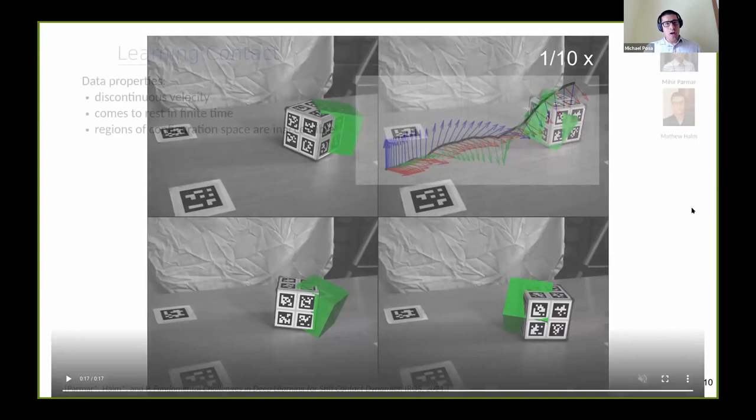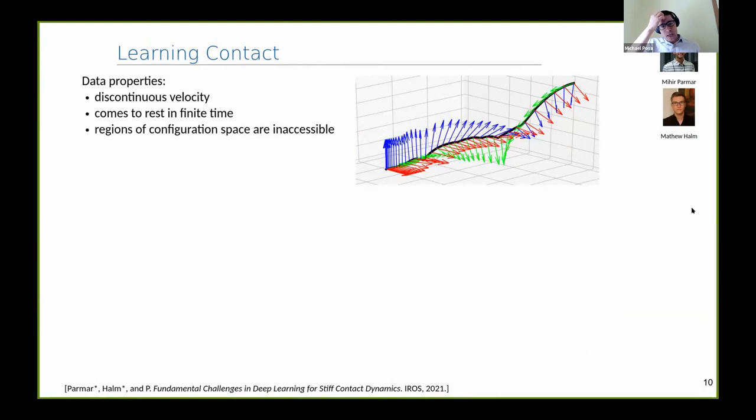What's going on? First, let's look at the data itself. The data has a few interesting properties. One is the velocity is discontinuous some time, and we have these impact events. Another interesting fact is it comes to rest in finite time—this is not asymptotic convergence. This is Coulomb friction stopping it in some finite time, a time that scales linearly roughly in the amount of energy in the system and velocity. Then there's regions of configuration space you just don't get data in, corresponding to penetration. This cube was never below the table. If you start predicting it below the table, you don't have any data there, and all bets are off.